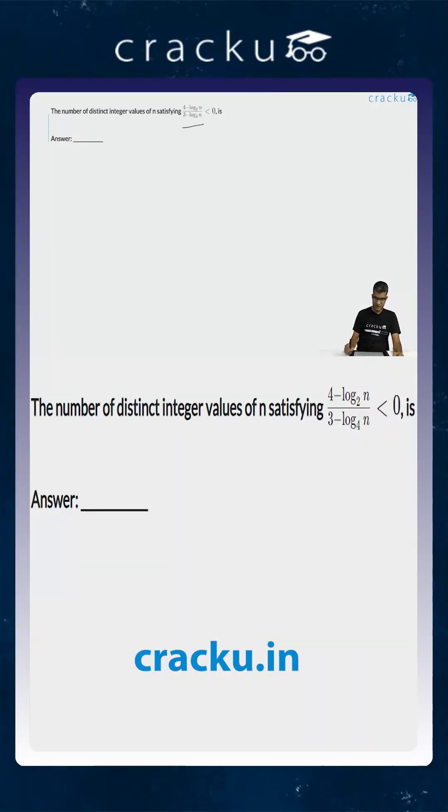In this question we are asked to calculate the number of distinct integer values of n for which the inequality 4 minus log n to the base 2 divided by 3 minus log n to the base 4 is less than 0.